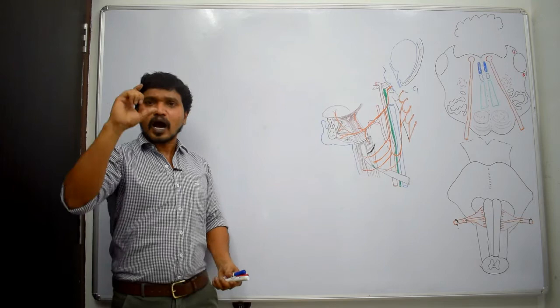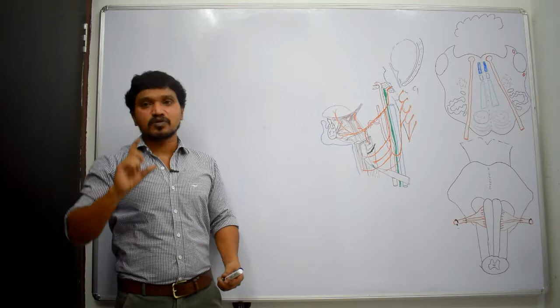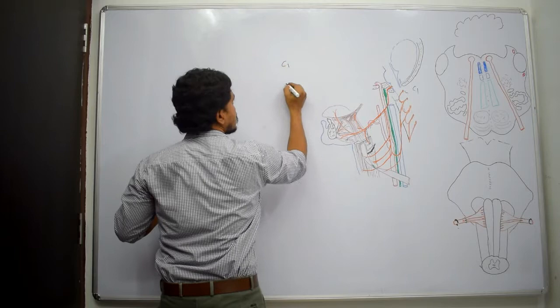Now we'll discuss about cervical plexus. Cervical plexus is formed by the upper four cervical nerves, that means the anterior primary rami of the upper four cervical nerves.